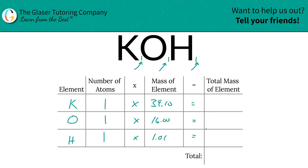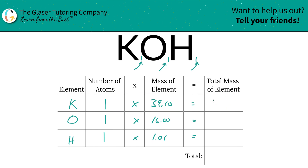Then we're going to find the total mass of each element in the compound by simply multiplying across each row — so that's 39.10, 16 for oxygen, and 1.01. It's the same as all the masses, but that's only because there's only one atom of each. And then when we add this all together, we get 56.11.